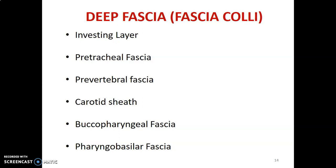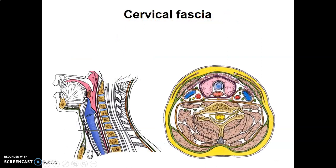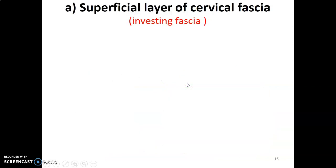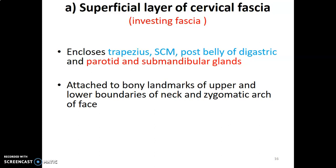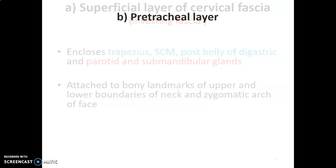There are just some major points you need to remember. We start with the outermost layer, highlighted here in green — that's the investing fascia. It covers sternocleidomastoid anteriorly as well as the posterior belly of the digastric muscle. The most superficial part of the fascia coli is the investing fascia. It encloses trapezius, sternocleidomastoid, posterior belly of digastric, and also encloses the parotid and submandibular glands. It's attached to the bony landmarks of the upper and lower boundaries of the neck and also attaches onto the zygomatic arch of the face.